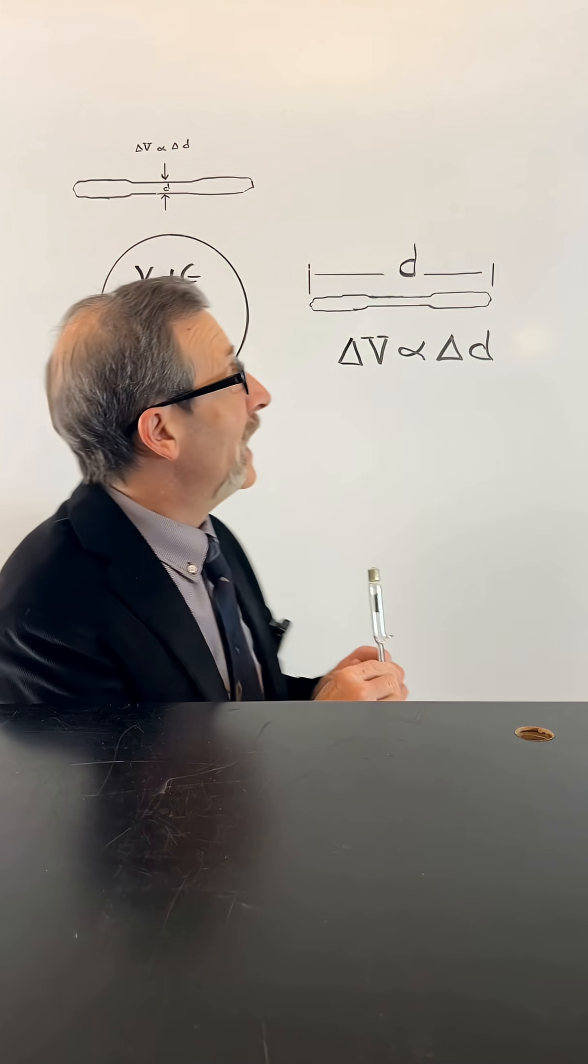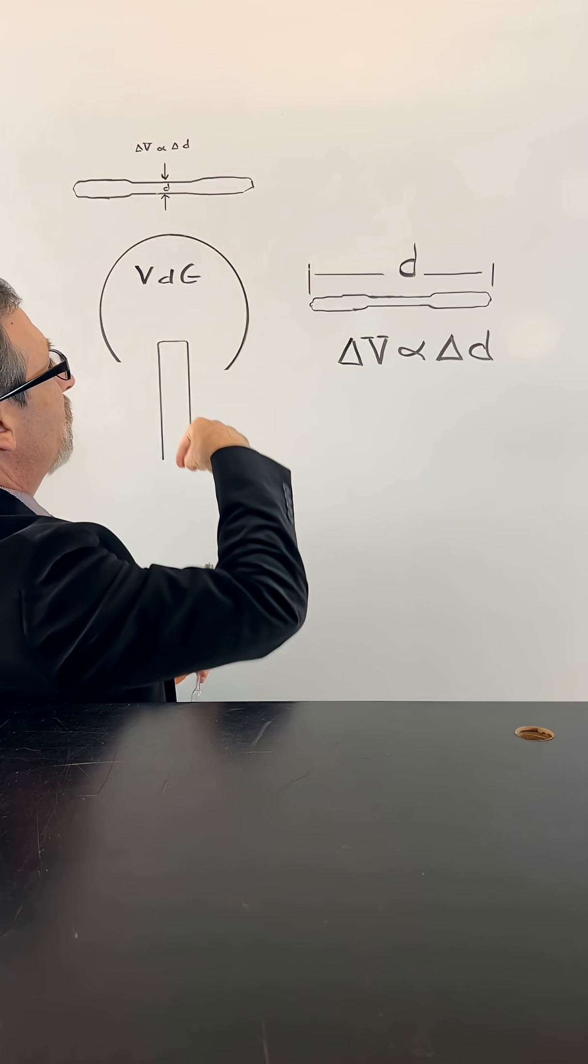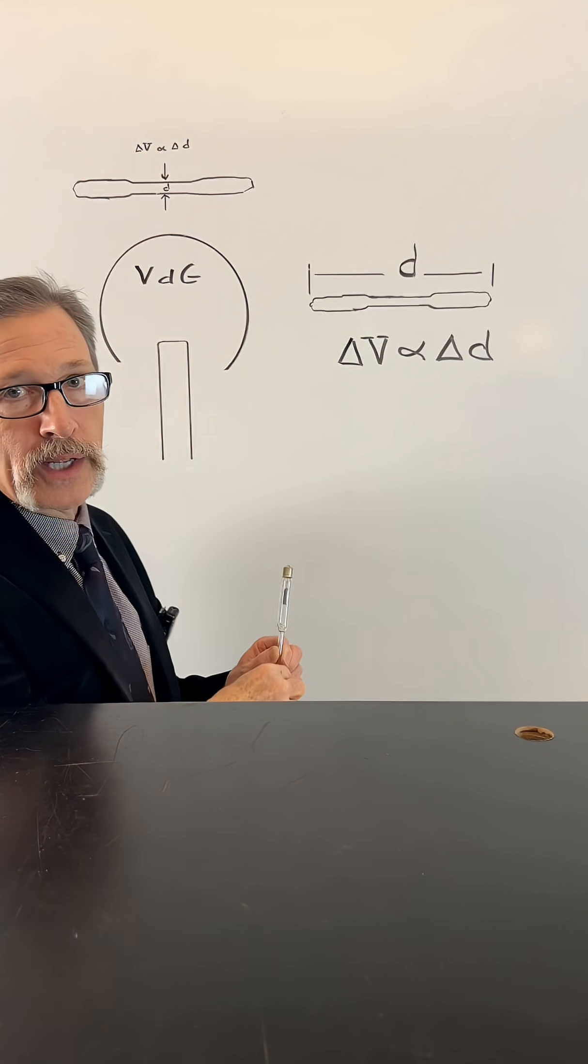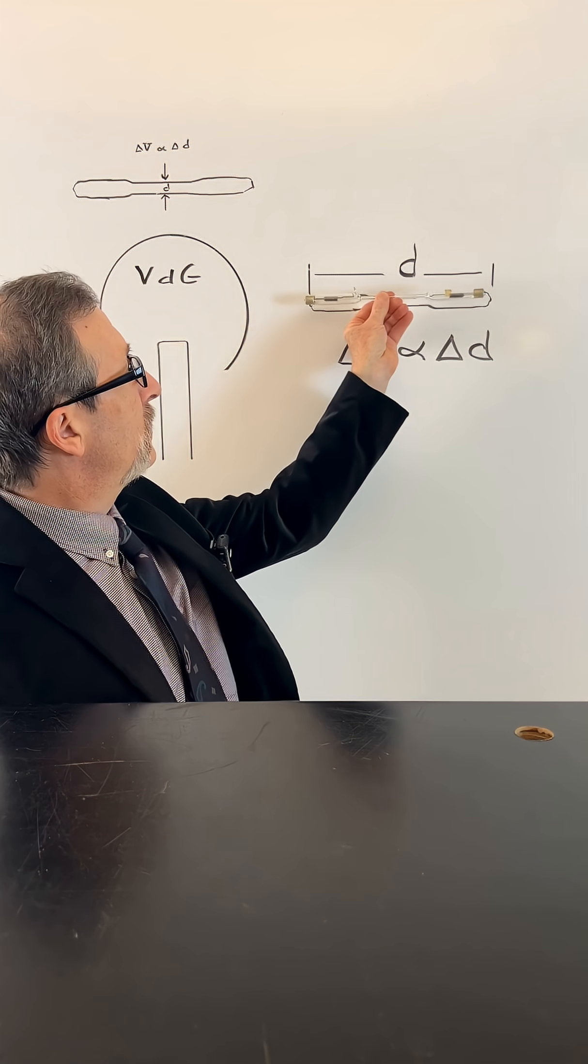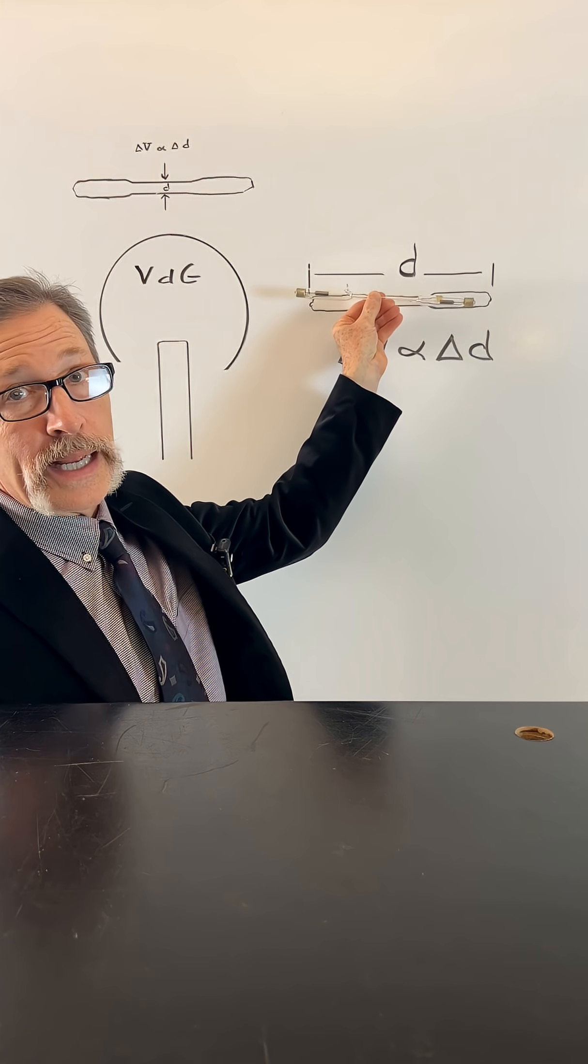Here we've got our glass tube, and I've drawn a Van de Graaff generator here. Here's where the belt would be going up and down. I also took this and used it as a template to draw our gas tube.